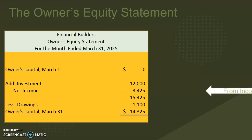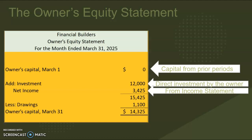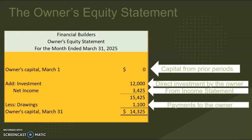We can see here on the owner's equity statement that the net income from the prior statement is plugged in. This statement shows how much equity the owner has in the company. It starts with the beginning capital — this example is a brand new company so the beginning capital is zero — we then add in that net income and also any direct investment by the owner, both of which increase the owner's equity.